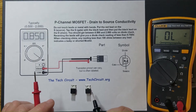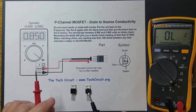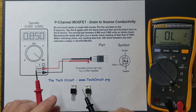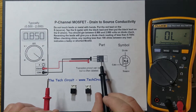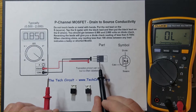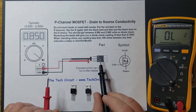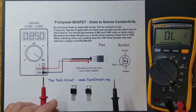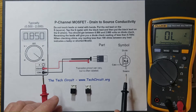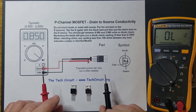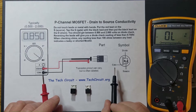This is a P-channel MOSFET. The leads are called the drain, source, and the gate. The current flows from the source to the drain on a P-channel MOSFET.